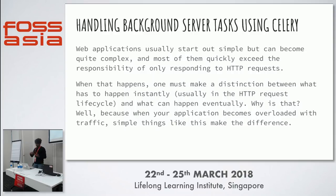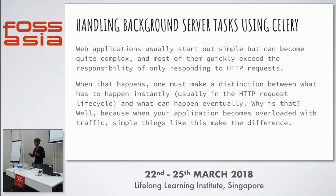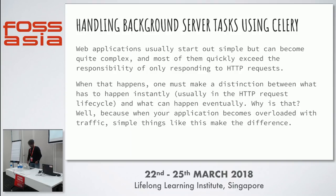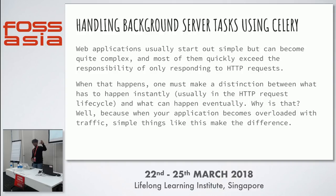I'll be talking about handling background asynchronous tasks using Celery. A single server handling all tasks is really difficult. If you want to send a huge amount of data like 20 or 30 GB, you need background asynchronous servers. They create multiple servers, divide the data into chunks, feed each chunk into a separate server, and then aggregate all results at one place — that's a better way of handling big tasks.